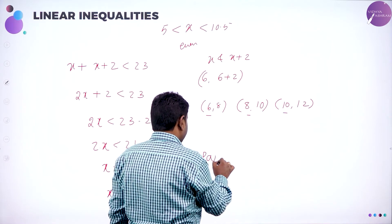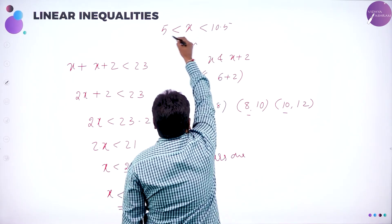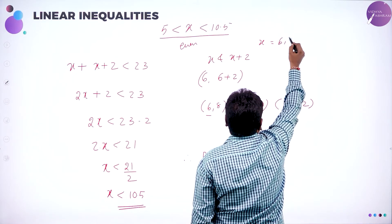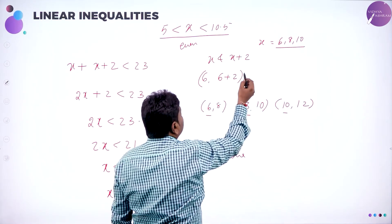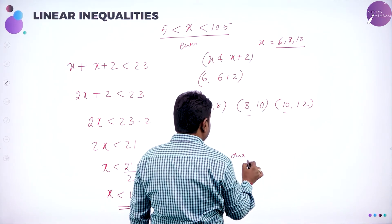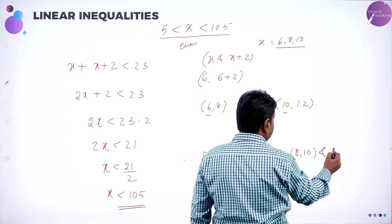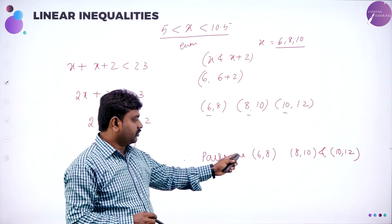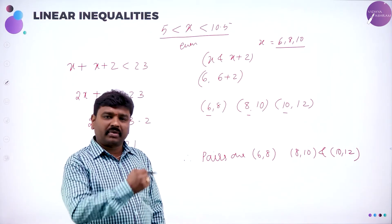So these are the pairs: x value is 6, 8, 10. What are the even numbers lying between 5 and 10.5? X values: 6, 8, 10. And the pair is x and x plus 2 — so 6 and 8, 8 and 10, 10 and 12. So the pairs are (6, 8), (8, 10), and (10, 12). Check: 6 plus 8 is 14 less than 23, and integers are greater than 5 — that's it. We have done the problem. I hope all of you understood this.